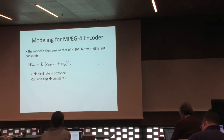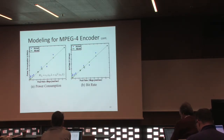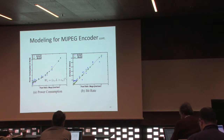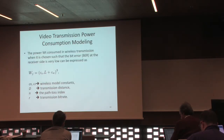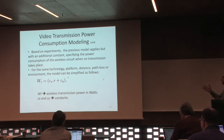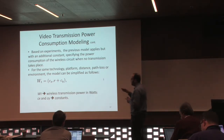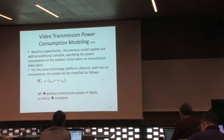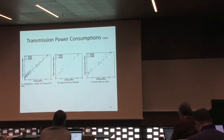We did the same thing for MPEG-4, finding similar models, and validated them. We also developed something similar for MJPEG and validated it. For video transmission, for the same technology platform, distance, and path loss, the model can be simplified as linear with the bit rate plus a constant, and here it shows the validation results.